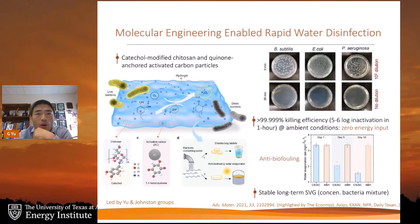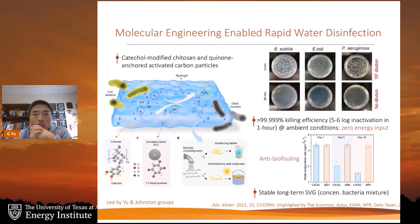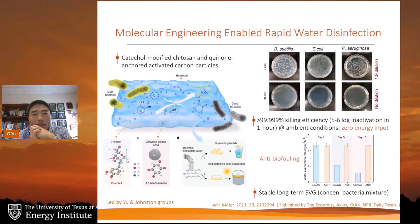One of our most recent findings addresses long-term stability and bacterial challenges: we developed the first antibacterial hydrogel (ABH), using a small molecule-enabled hydrogen peroxide generator based on quinol chemistry coated onto activated carbon particles. The hydrogen peroxide generated during the process attacks cell components and disrupts bacterial metabolism. These hydrogel tablets achieve over 99.999 percent water disinfection efficiency without any energy input.